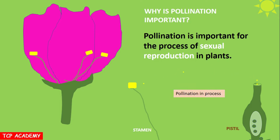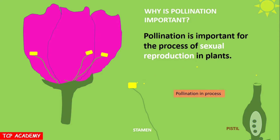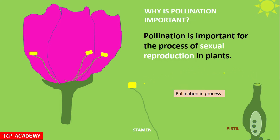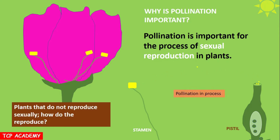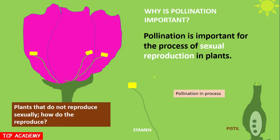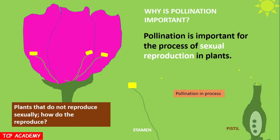Why is pollination important? Pollination is important for the process of sexual reproduction in plants. In sexual reproduction, the male and female gametes come together to produce an offspring. The process begins with pollination and is followed by fertilization. Plants that do not reproduce sexually reproduce asexually — using a part of a parent to produce an offspring.